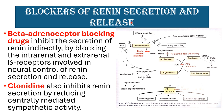Beta adrenergic receptors are present at the juxtaglomerular apparatus and can be inhibited by beta receptor blockers, which indirectly inhibit renin release by blocking the intrarenal and extrarenal beta receptors involved in neuronal control of renin secretion and its release. Clonidine also inhibits renin secretion by reducing centrally mediated sympathetic activity.